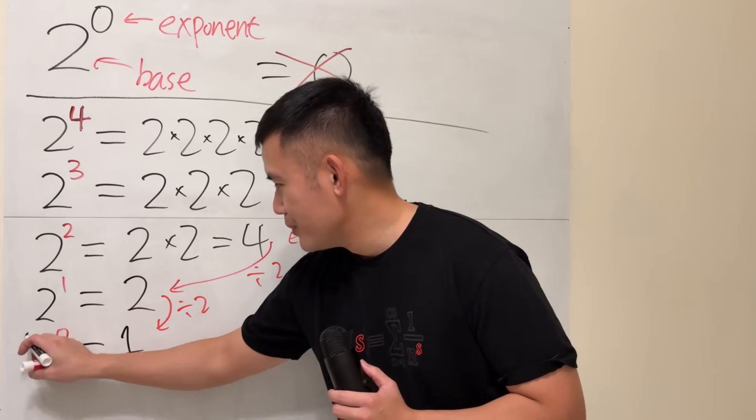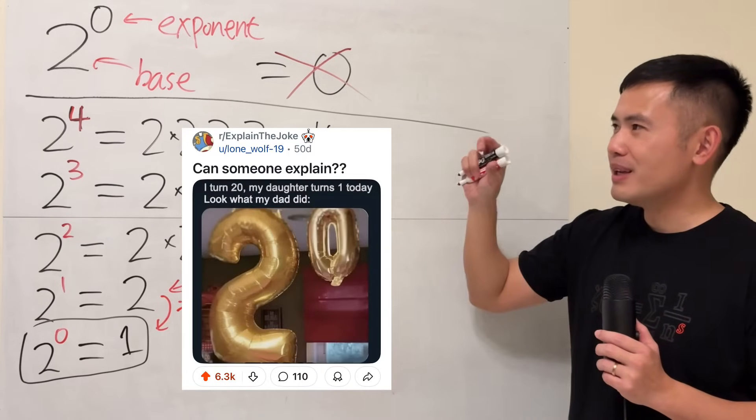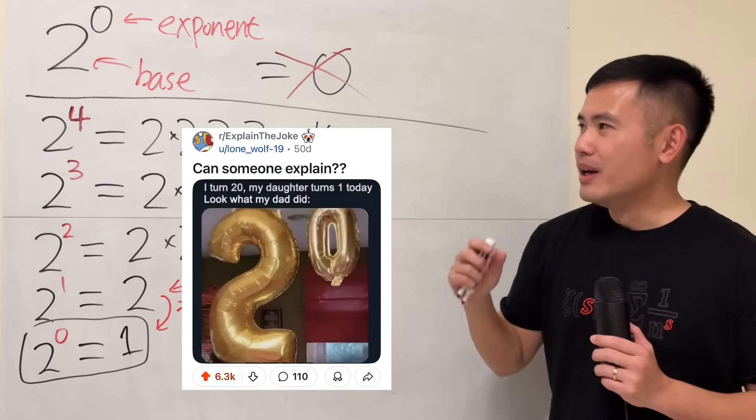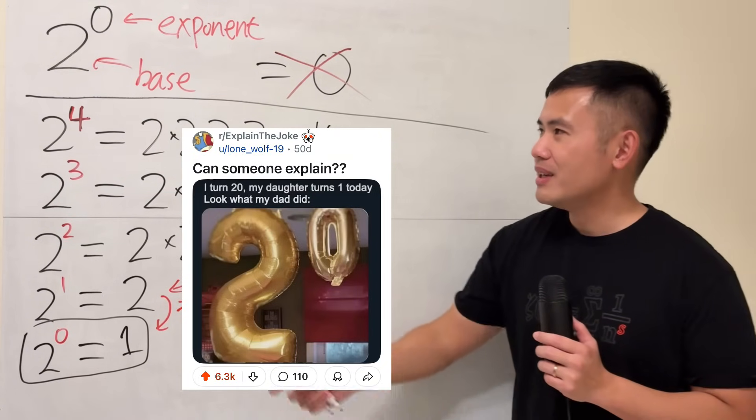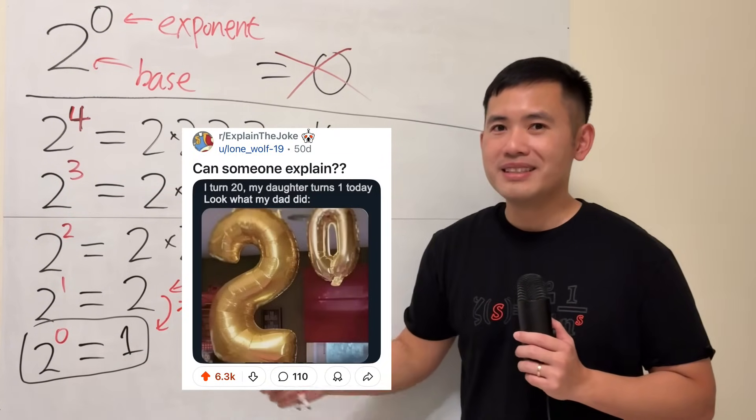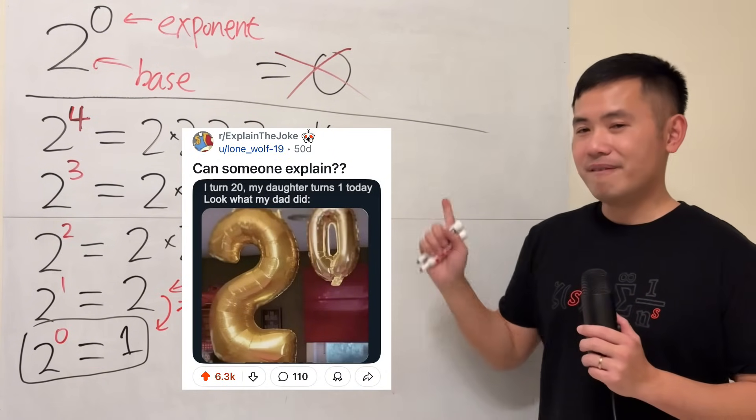Ladies and gentlemen, 2 to the 0's power is equal to 1. And when you place the balloon that way, you see 2 and 0, so it shows 20. But mathematically, this right here gives you 1. So you have 20 and also 1 in the same picture. Very cool, huh?